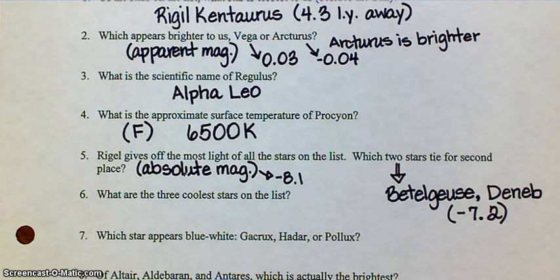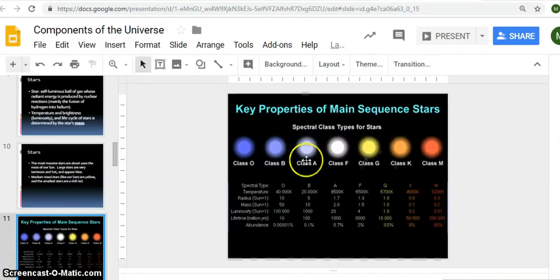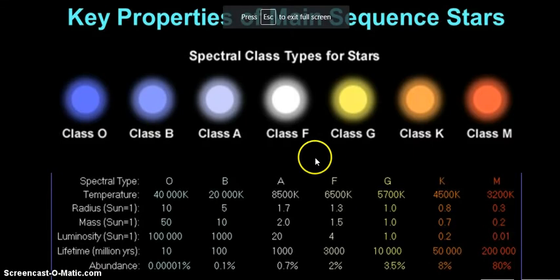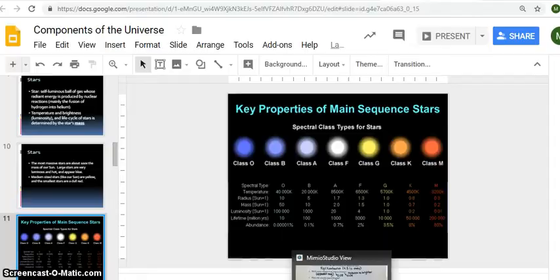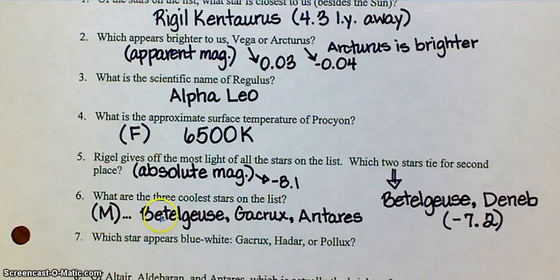The next question: which are the three coolest stars on the list? We're going to look at spectral type, which is the last column on your chart, because spectral type tells us not only something about the color of the star but also its temperature. Going back to the chart: O's are the hottest, M's are the coolest, and there are three M's on your chart, so find them. The three type M's are Betelgeuse, Gacrux, and Antares.